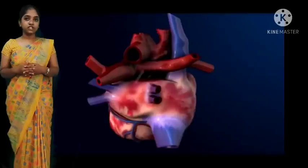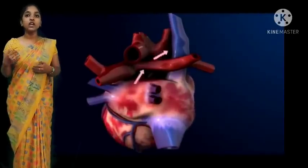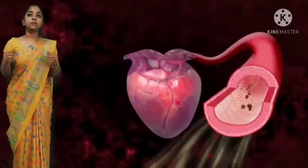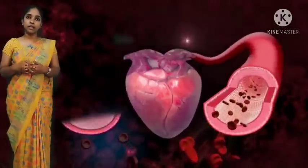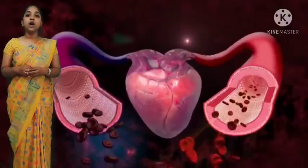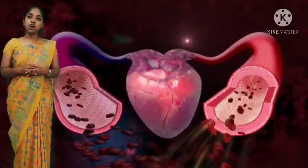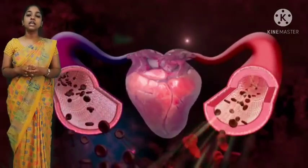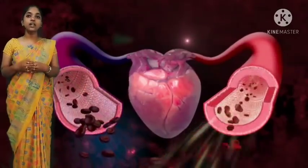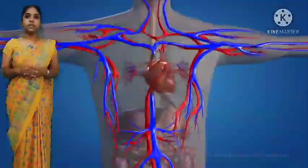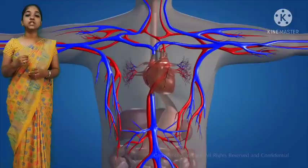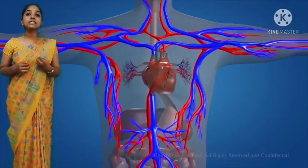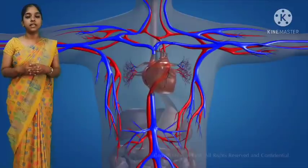When the heart pumps the blood into the blood vessels with a pressure, it is called blood pressure. There are two types: high blood pressure and low blood pressure. The heart consists of four chambers. The heart beats around 72 times per minute. You can even keep your hand below your heart and feel it.